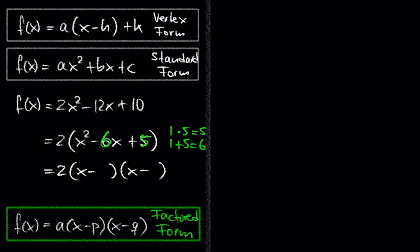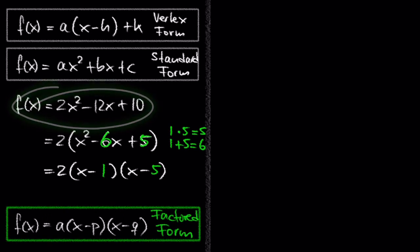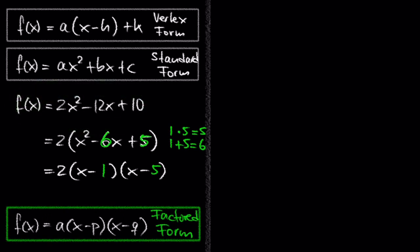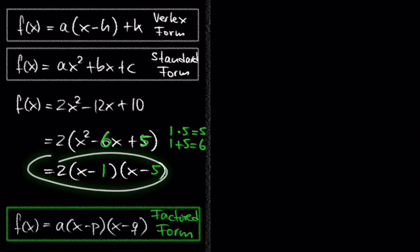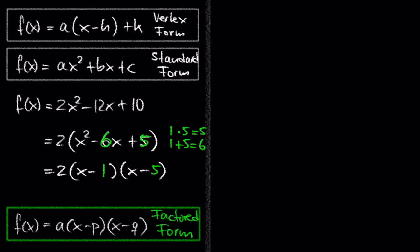After plugging in these two numbers, we converted the standard form f of x equals 2x squared minus 12x plus 10 into the factored form f of x equals 2 times (x minus 1) times (x minus 5).